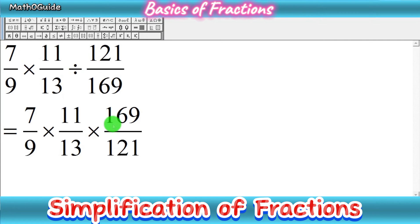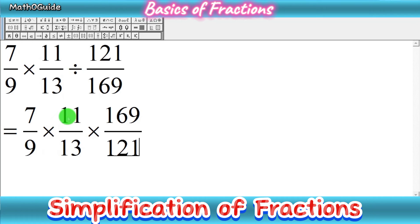Now you can see that we have all the fractions being multiplied. When multiplying fractions, we first check if some numbers have common factors so we can cancel them out to get a simpler multiplication. We check cross numbers: 7 and 13 have no common factor, and 9 and 11 have no common factor, so those cross numbers have no common factor.